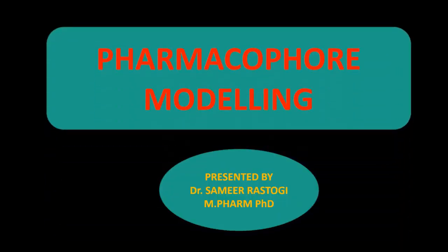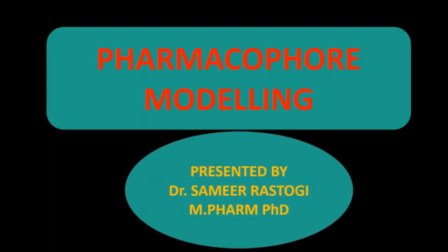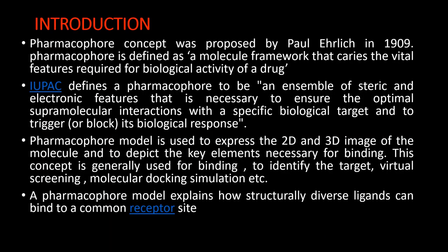Hello students. In this video we will discuss pharmacophore modeling, another topic of this fifth unit on drug design. The pharmacophore concept was proposed by Paul Ehrlich in 1909. A pharmacophore is defined as a molecular framework that carries the vital features required for biological activity of a drug. As per IUPAC, a pharmacophore is an ensemble of steric and electronic features necessary to ensure optimal supramolecular interaction with a specific biological target and to trigger or block its biological response.